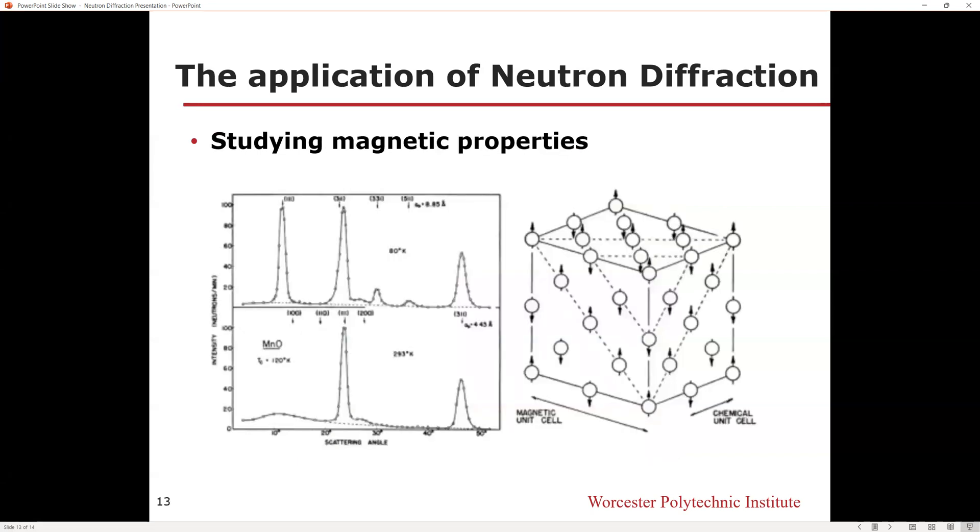When neutrons are incident on ferromagnetic or antiferromagnetic materials, in addition to the usual atomic nuclear scattering, they are also subject to magnetic scattering caused by the orderly arrangement of the magnetic momentum of the atoms in the crystal. The magnetic scattering of neutrons caused by the magnetic order not only changes the intensity of Bragg diffraction peaks generated by the original nuclear scattering, but also presents additional superlattice diffraction peaks.